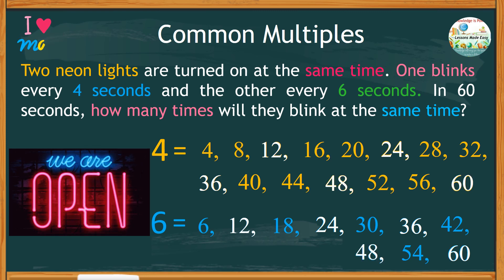These common multiples represent the time the two lights will blink at the same time. So, how many common multiples are there till 60?